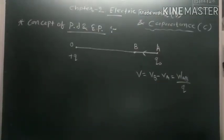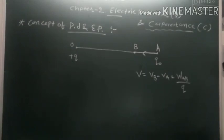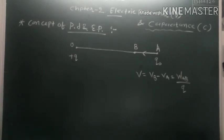From this equation we can see that the potential difference between two points A and B in an electric field may be defined as the amount of work done in moving a unit positive charge from one point to the other against the electrostatic force.